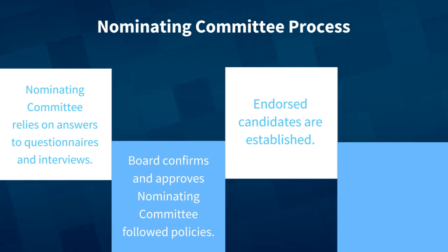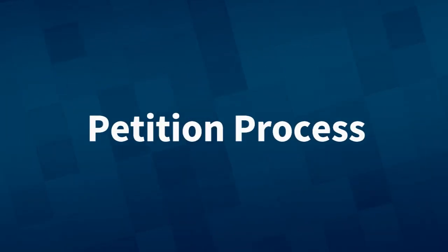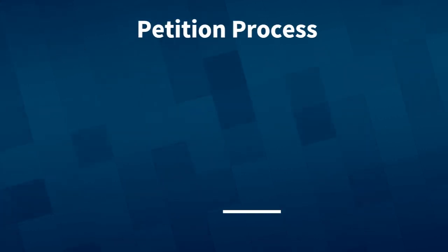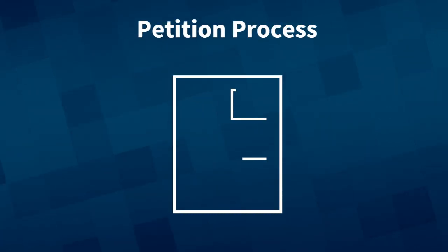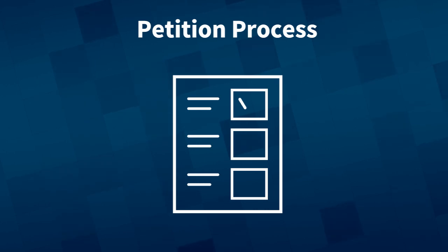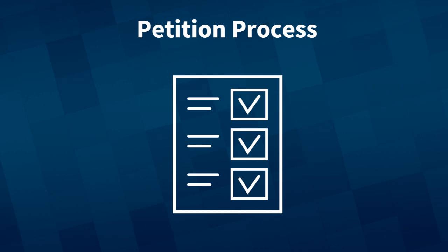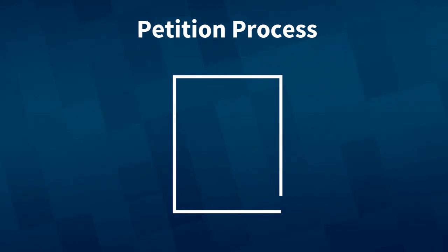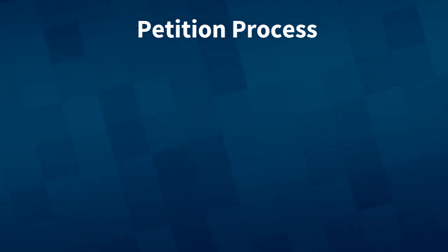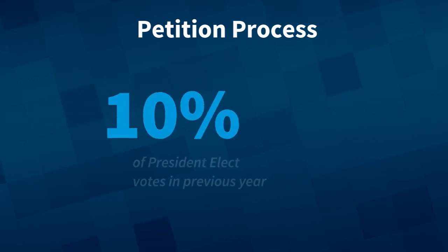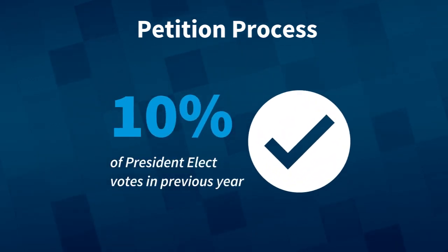All candidates will then be contacted and told whether they were selected as an endorsed candidate on the ballot. Nominees not placed on the ballot have the opportunity to put their name forward through the petition process, but only those candidates who went through the Nominating Committee vetting process are eligible. Non-endorsed nominees need a certain number of petitions for a place on the ballot, set at 10% of the previous year's President-Elect voters.